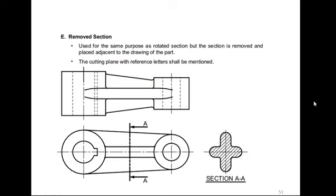Next example: this is a top view and this is a front view of our problem. We want to understand how it looks inside, which cannot be seen from outside. So we take one cutting plane, make a cut, and the direction of view is shown. We remove one side and get this view here, and we just keep it aside — this is called a sectional view, specifically a removed section view.